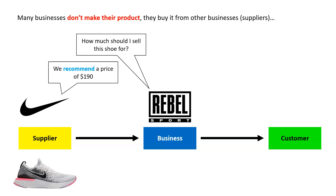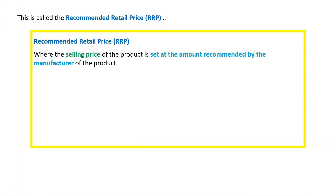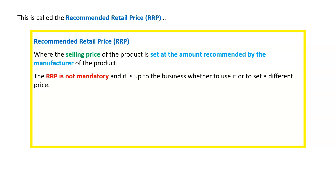The supplier will say, "We recommend a price of $190." In this case, this is called the recommended retail price — where the selling price of the product is set at the amount recommended by the manufacturer. It's not mandatory to use the RRP; a lot of businesses do, but they don't have to.